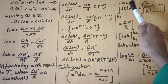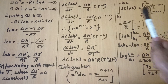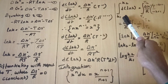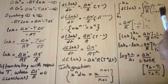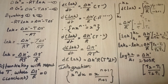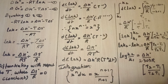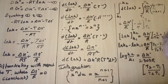Next, let's do the integration. In the integration, we have d ln K with the limit from K1 to K2. We have T from T1 to T2. Delta H dot by R is a constant value, so we have to carry out the integration.